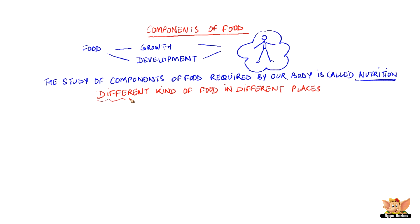People eat different kinds of food in different places, and the variety in our food depends upon the environment, climate and vegetation that determines the availability of the sources of food.